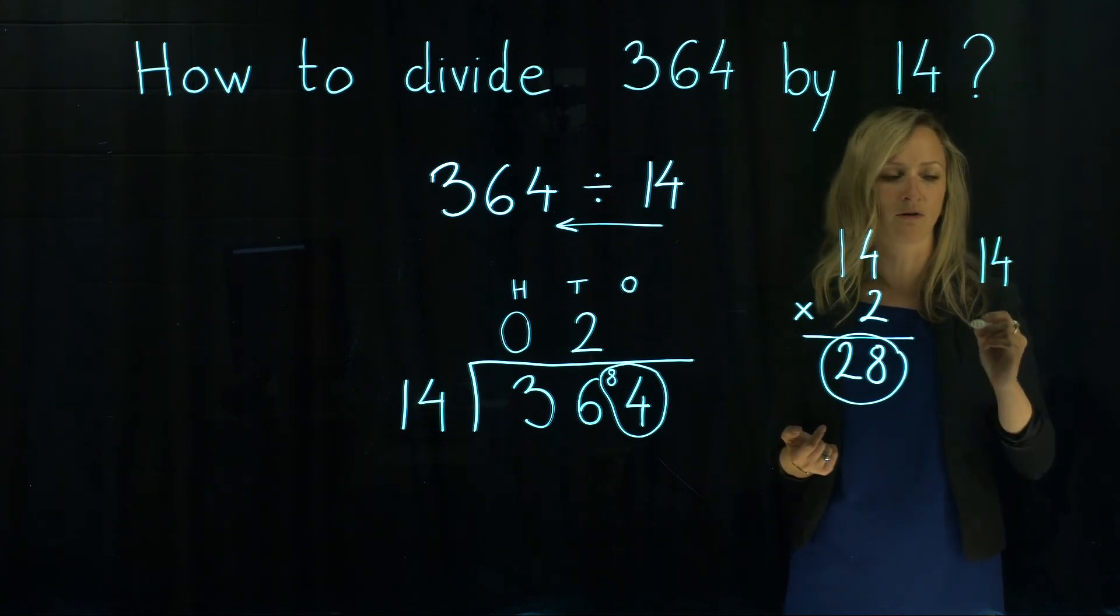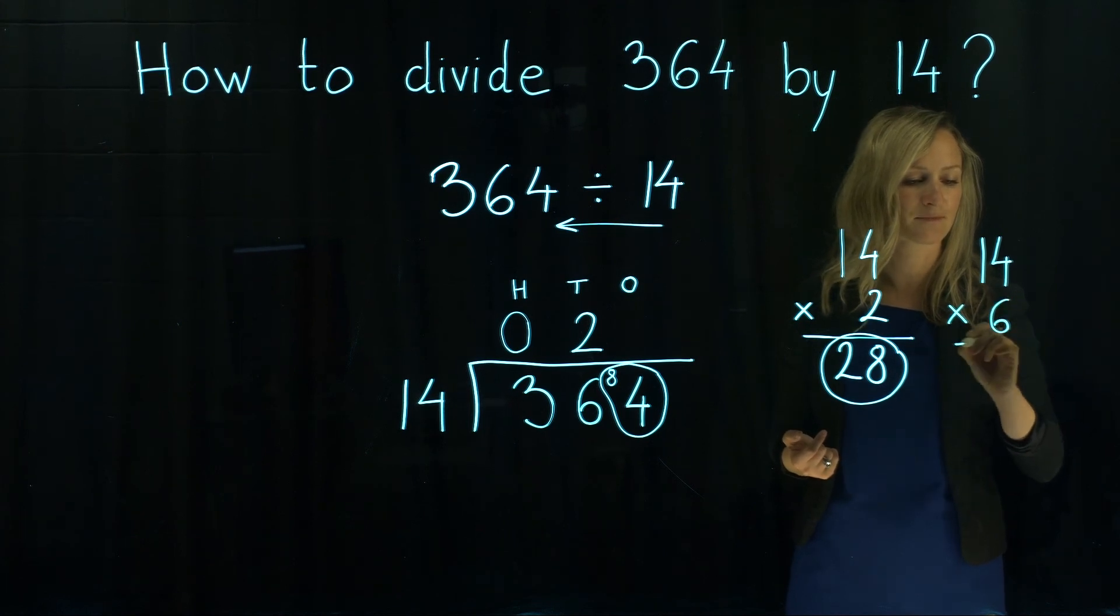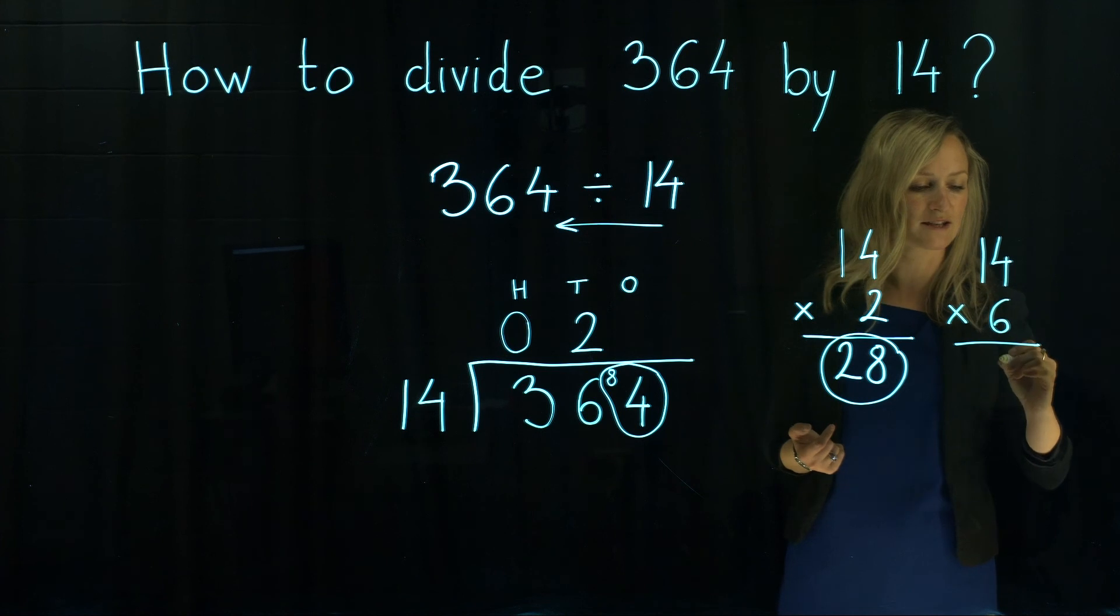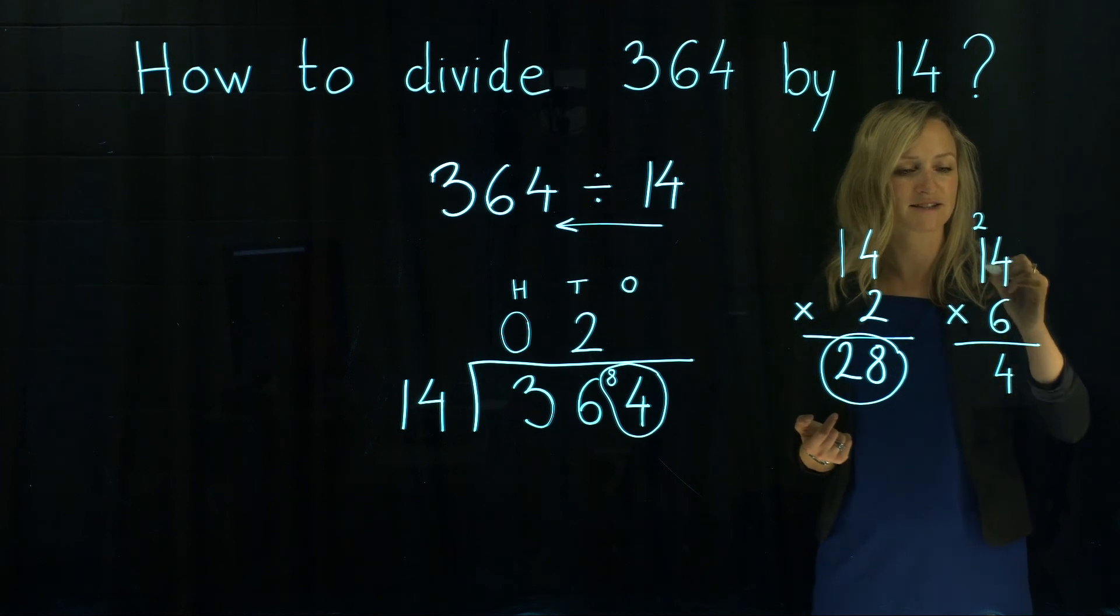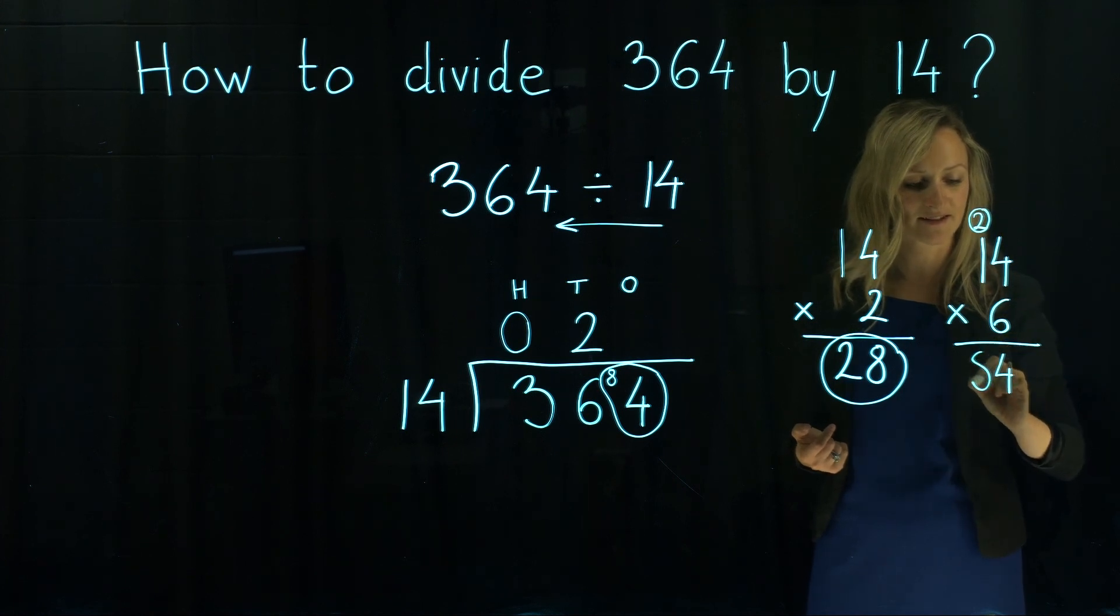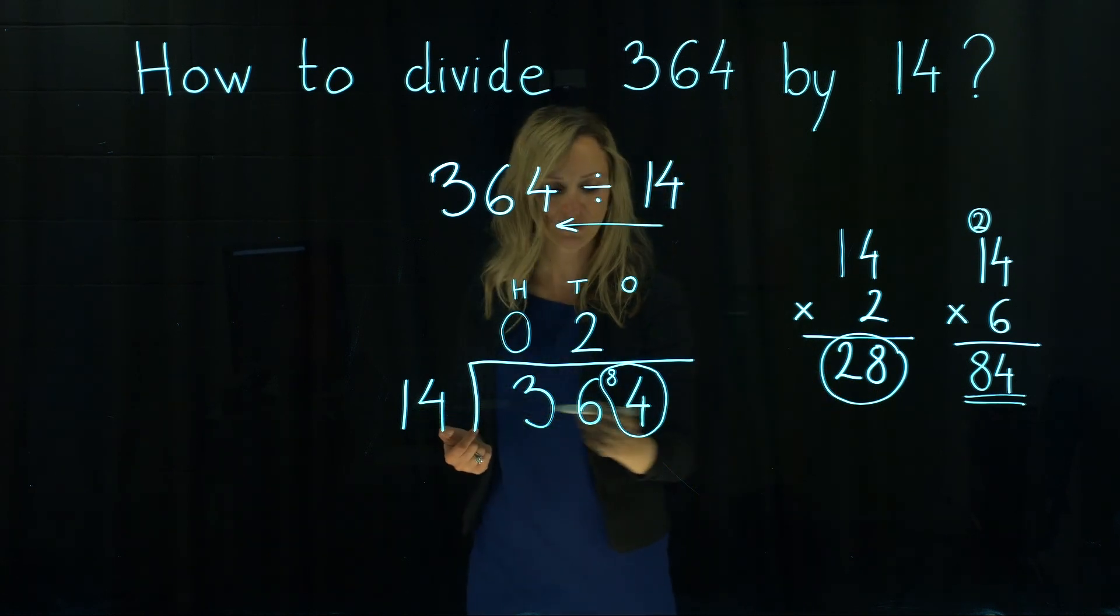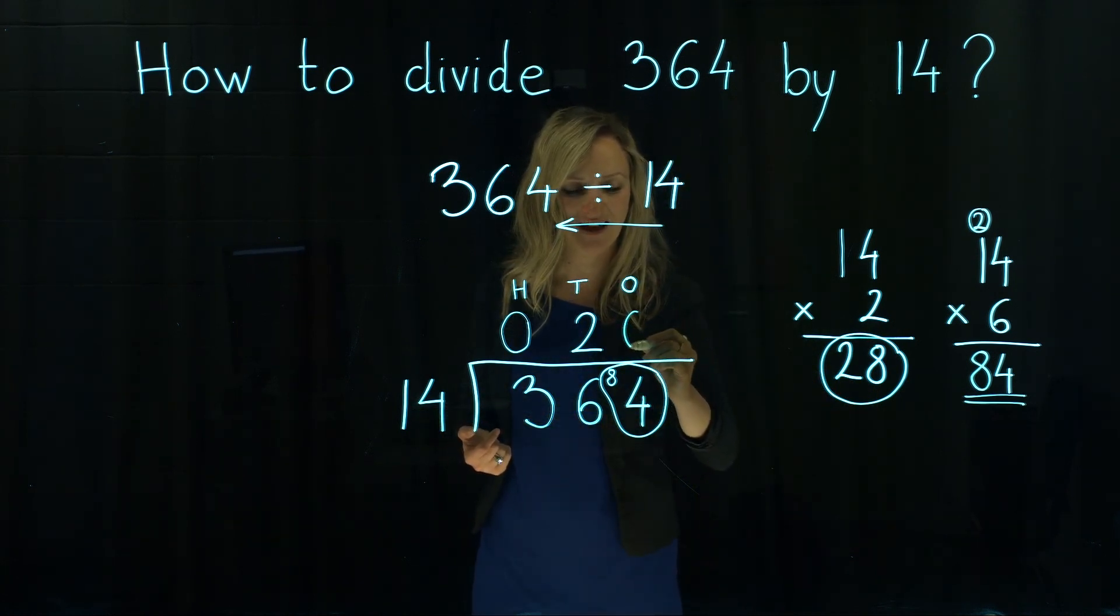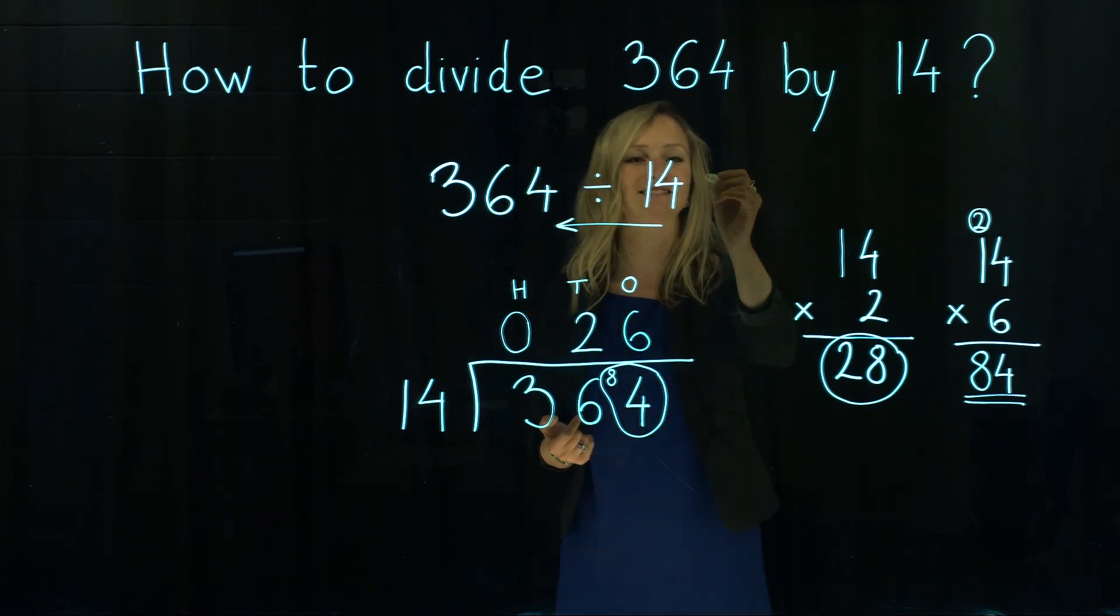So let's give it a go with our multiplication. So 14 times 6. 6 times 4 is 24. 2 carry over. 6 times 1 is 6 plus 2 is 8. That's brilliant. We can see that our number 14 goes exactly 6 times into 84. And that is our answer.